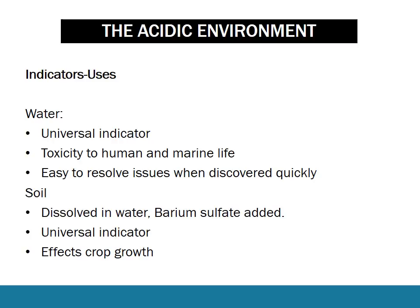Checking the pH of soil is a bit more difficult, mainly because soil is black and a solid. So we dissolve some soil in water, we add some white barium sulfate powder on top, which doesn't react and just acts as a white backdrop. We add some universal indicator, and we can easily determine the color and therefore pH of the soil. This affects crop growth and can be affected by things like water pH, acid rain, and leaching.